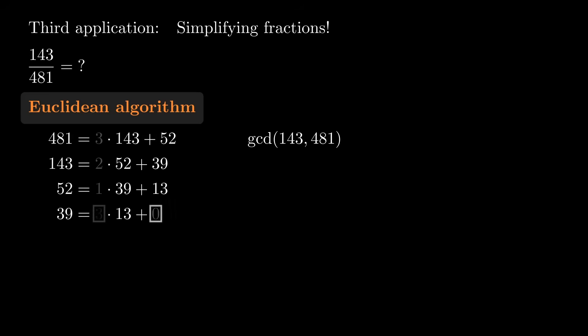39 divided by 13 is 3 with remainder 0. And the next step would be to divide 13 by 0. So we better stop there.